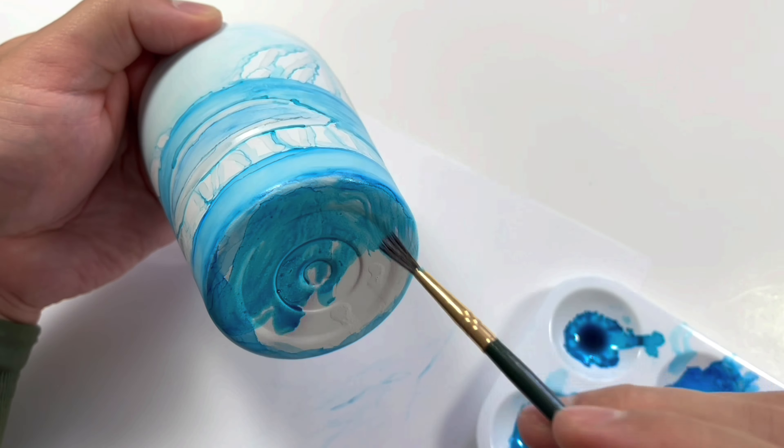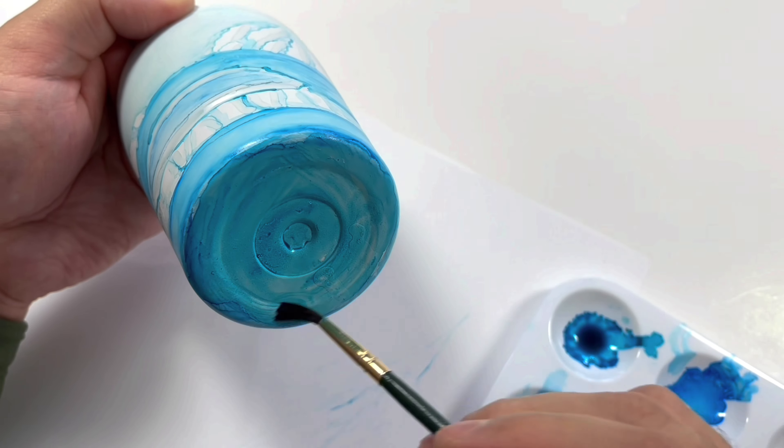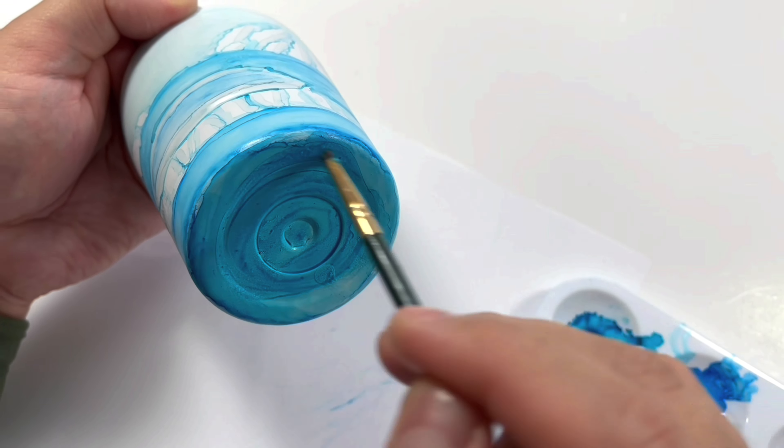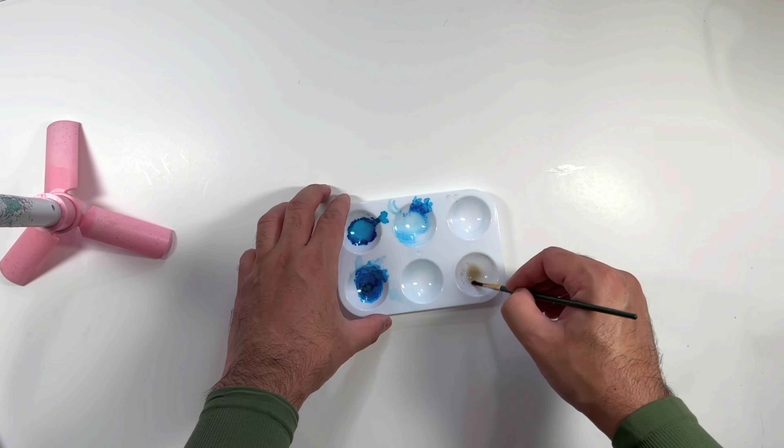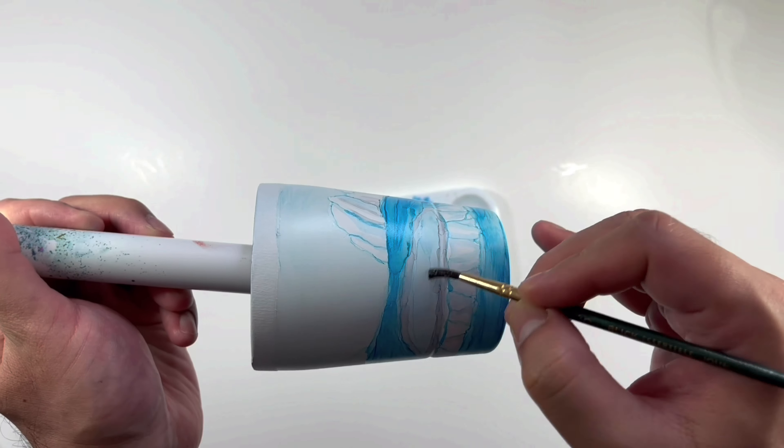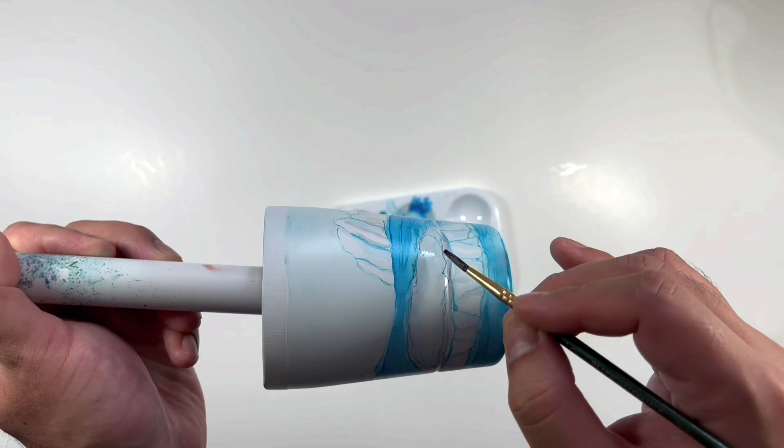We need to cover the base of the tumbler. I am using here the color we use for the water. With the gray shade, I am making a good base for the icebergs where the penguins will stand.